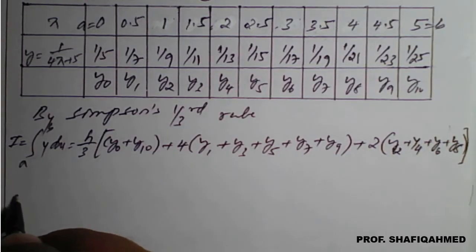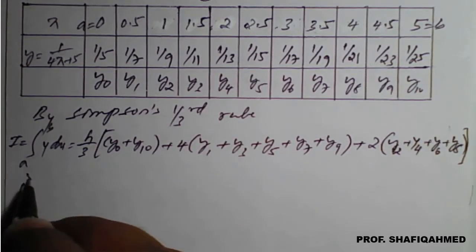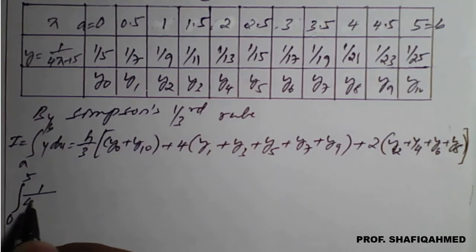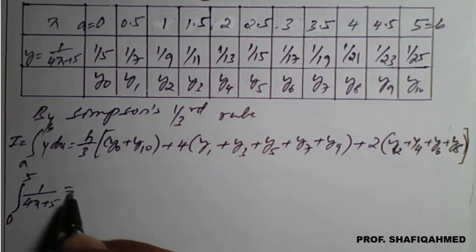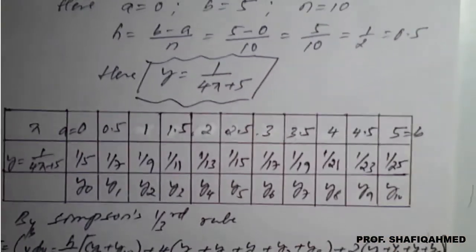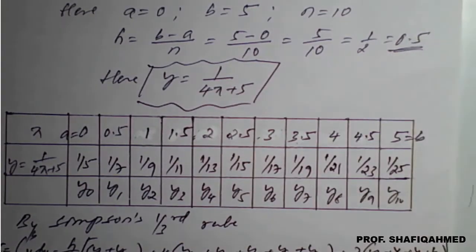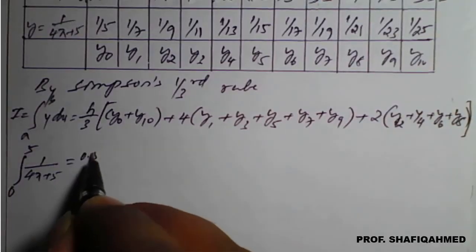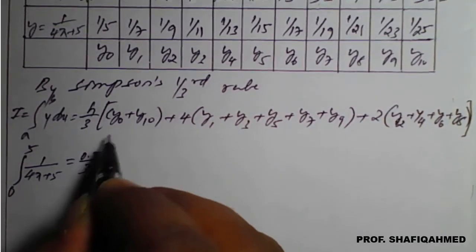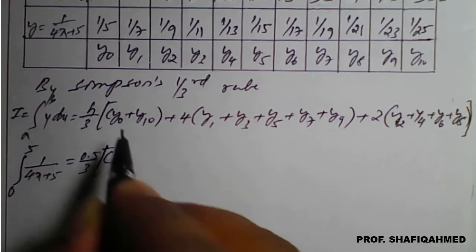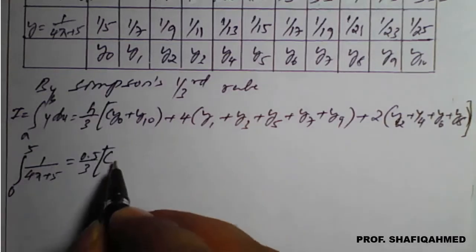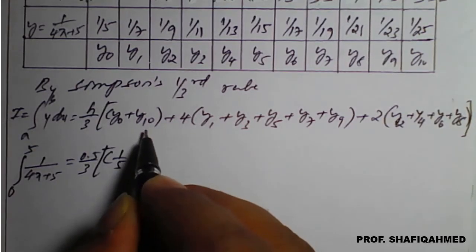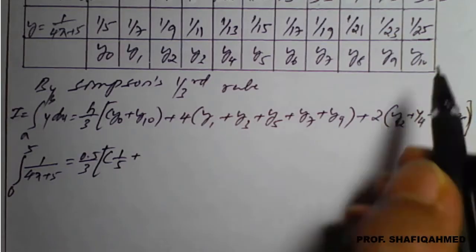Therefore, integration 0 to 5 of y dx is nothing but 1 divided by 4x plus 5. The h value is calculated as 0.5, so it is 0.5 divided by 3, bracket — y0 value from the table is 1 upon 5, plus y10 value from the table is 1 upon 25.